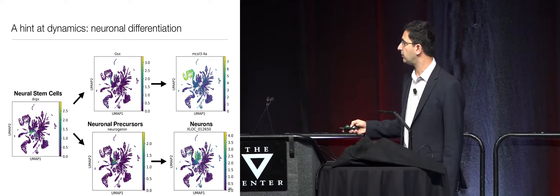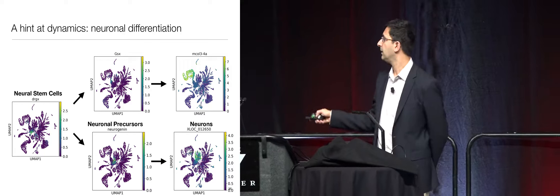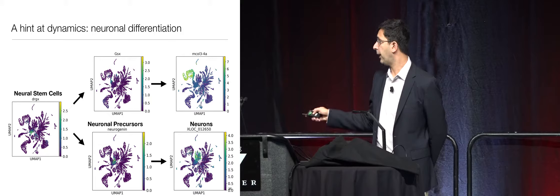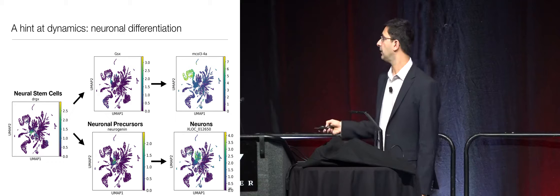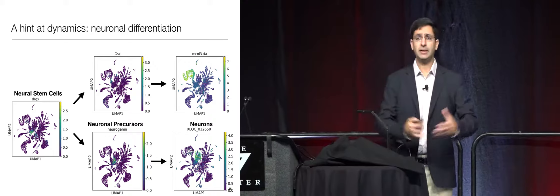There's also a hint at dynamics. The group of cells right at this base — we understand, due to the probability distributions over RNAs in them, that they're stem cells, developing and changing into different types of neurons. One branch develops into the stinging cells — in a sense the stinger is a form of brain of this animal — and others develop into neurons. You can really start to understand not just how the animal is put together, but how it reaches those states.